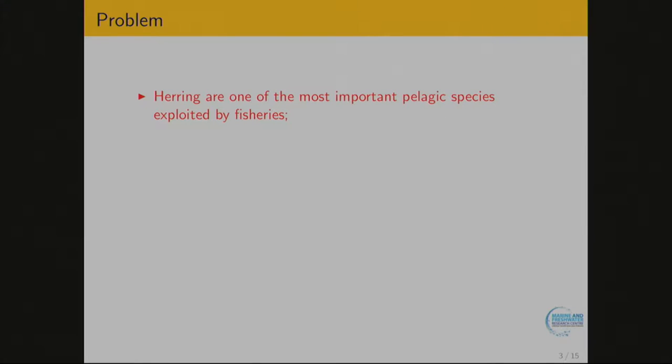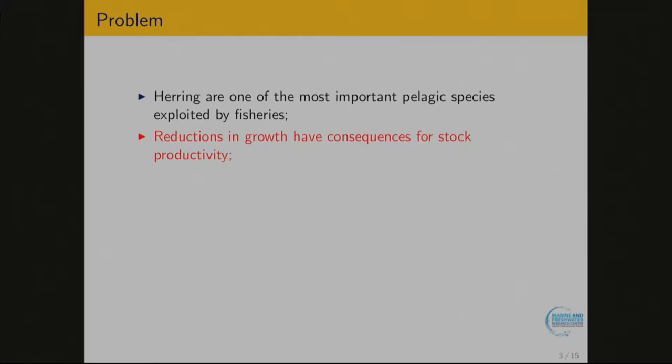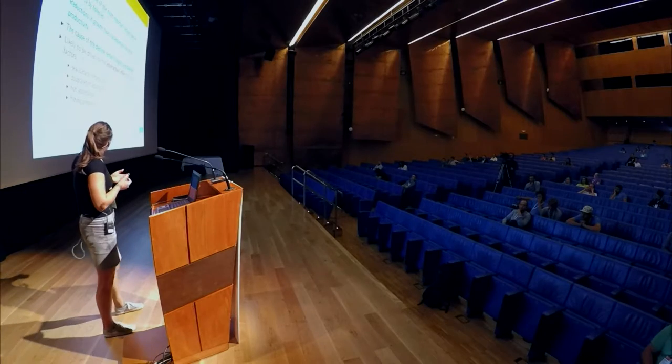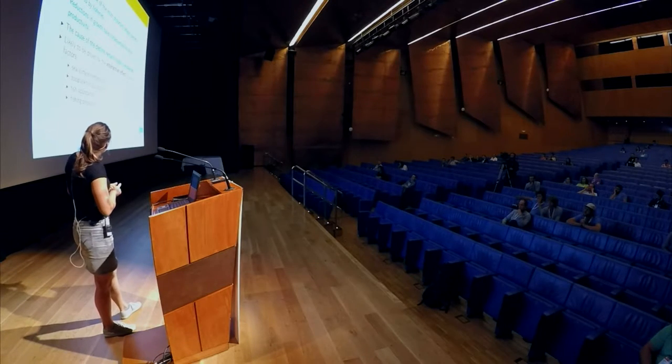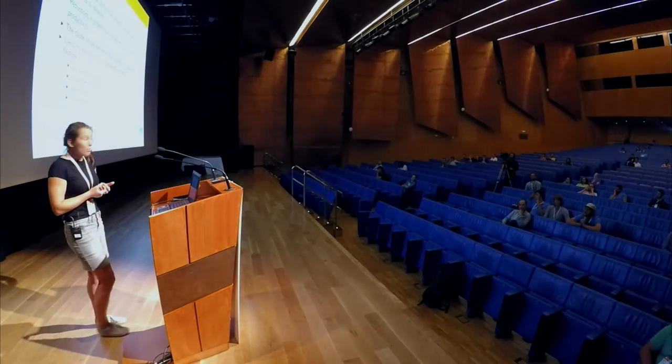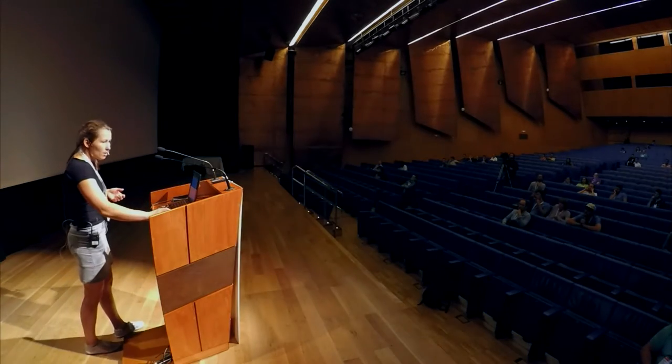Why is it a problem? It's because herring is a very important species for consumption. If it does decrease, it has consequences for further stock production — there will be less fish in the future, so we can consume less. We don't know what's causing the decline, but we presume there is an interactive effect of various factors, such as sea surface temperature, zooplankton abundance, fish abundance, or fishing pressure.